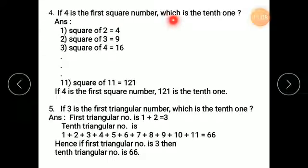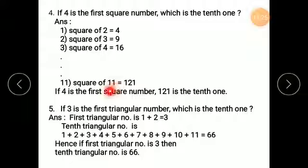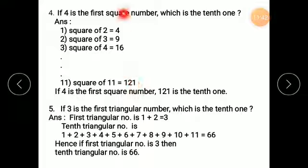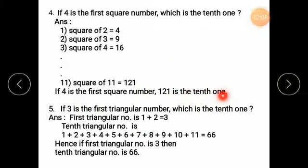If 4 is the first square number, what is the 10th one? 4 is the square of 2, so 2 is the first base. Counting forward: 2, 3, 4, 5, 6, 7, 8, 9, 10, 11 — 11 is the 10th base number. So 11 squared is 121. Therefore, if 4 is the first square number, then 121 is the 10th square number.